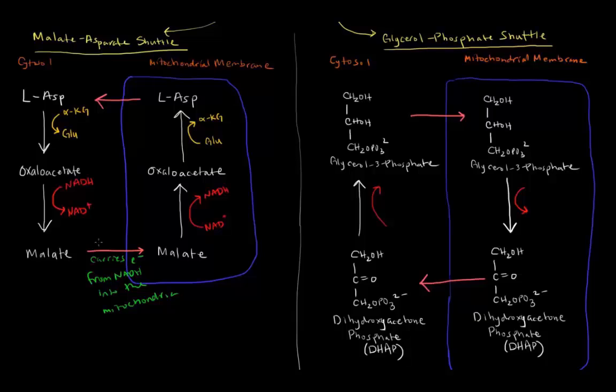This process can happen again. Basically in this case, this NADH is still an NADH, so now it can go to the electron transport chain and be valued at 2.5 ATP.